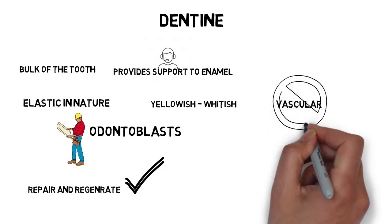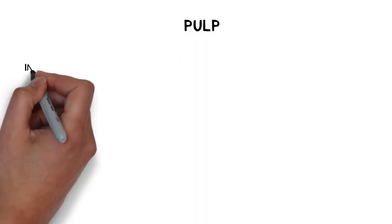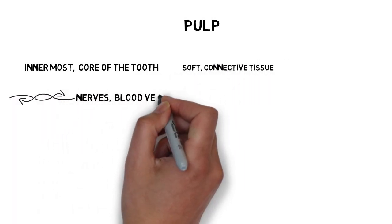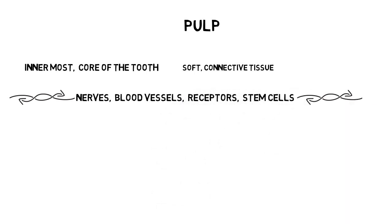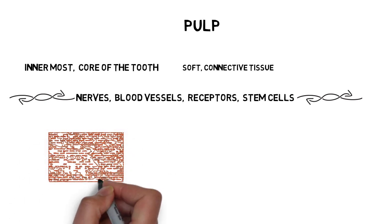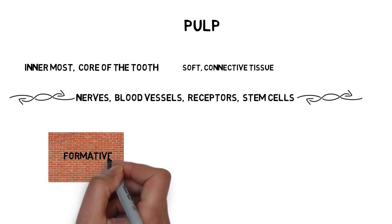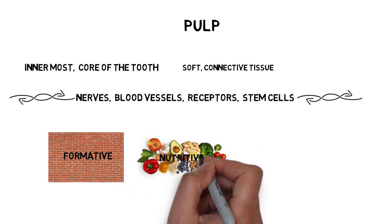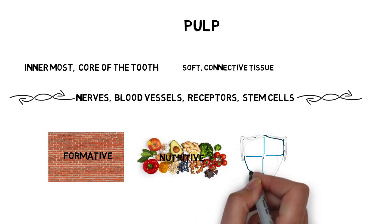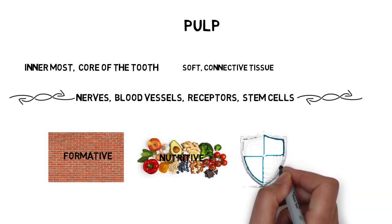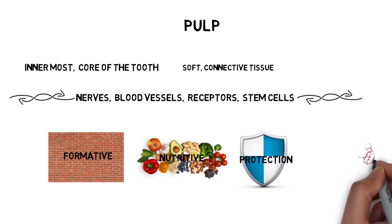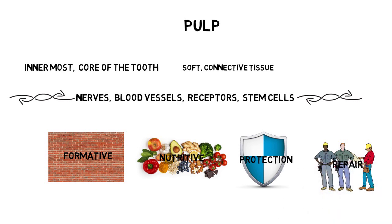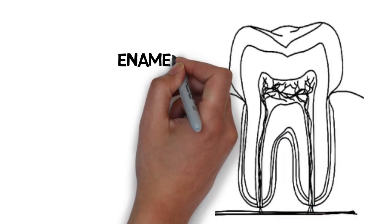One important thing to remember is that dentine has repair and regenerative capabilities, but it is not vascularized. Next, the pulp is the innermost soft connective tissue of the tooth, filled with nerves, blood vessels, and receptors. The pulp performs four main functions: first, the formative function — stem cells like odontoblasts and fibroblasts inside the pulp help in the formation of dentine. Second, the nutritive function — since dentine is avascular, its nutrition is provided through the pulp via blood vessels. Third, the protective function — nerves and receptors inside the pulp detect pain, pressure, and external stress. Fourth, the regenerative or reparative function — odontoblasts housed inside the pulp play an important role in regeneration of dentine.